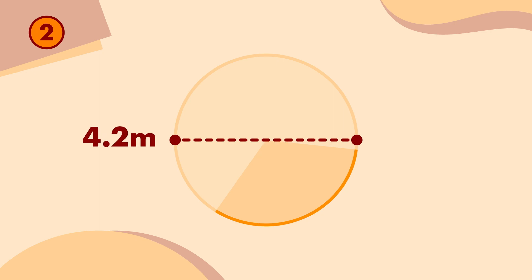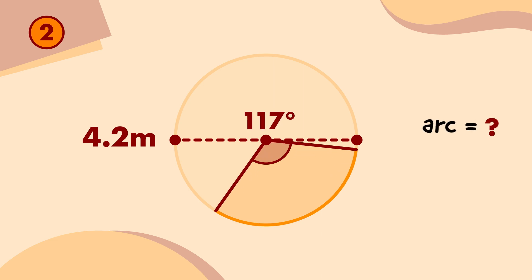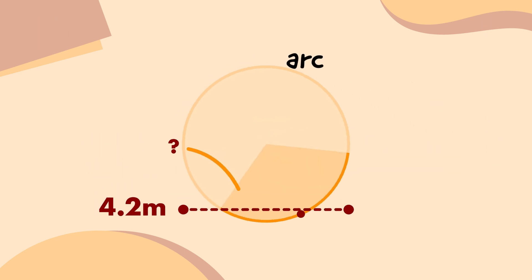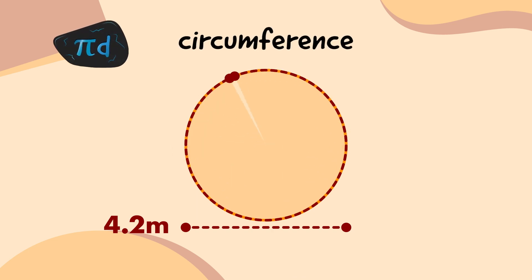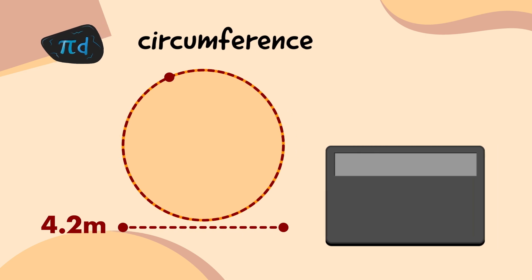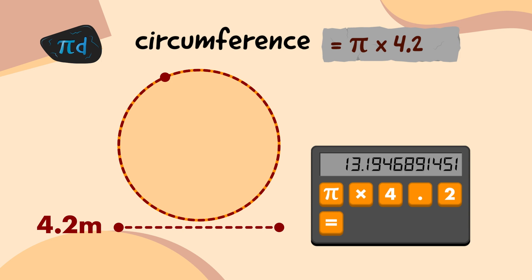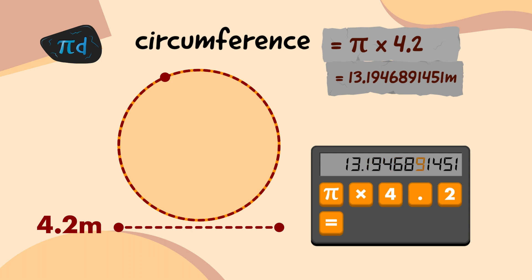Here's the next one. My measuring staff tells me that its diameter is 4.2 metres, and the angle of the covered portion is 117 degrees. I'll start by working out the circumference of the whole emblem. On my calculator, I'll multiply 4.2 by π — I'm going to press the π button, press the multiply button, type 4.2, and press the equals button, which tells me that the circumference of the second emblem is 13.1946891451 metres.